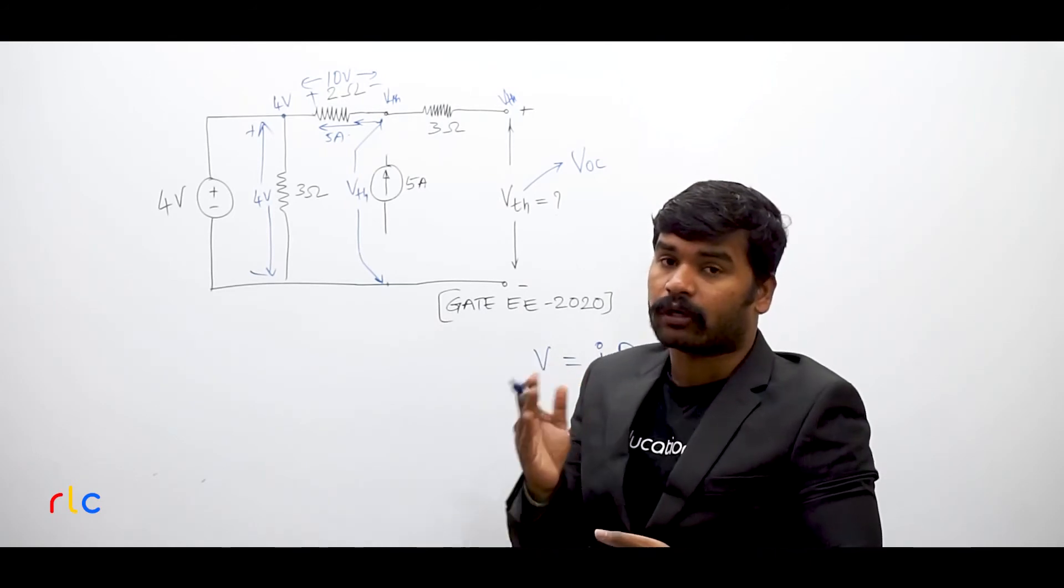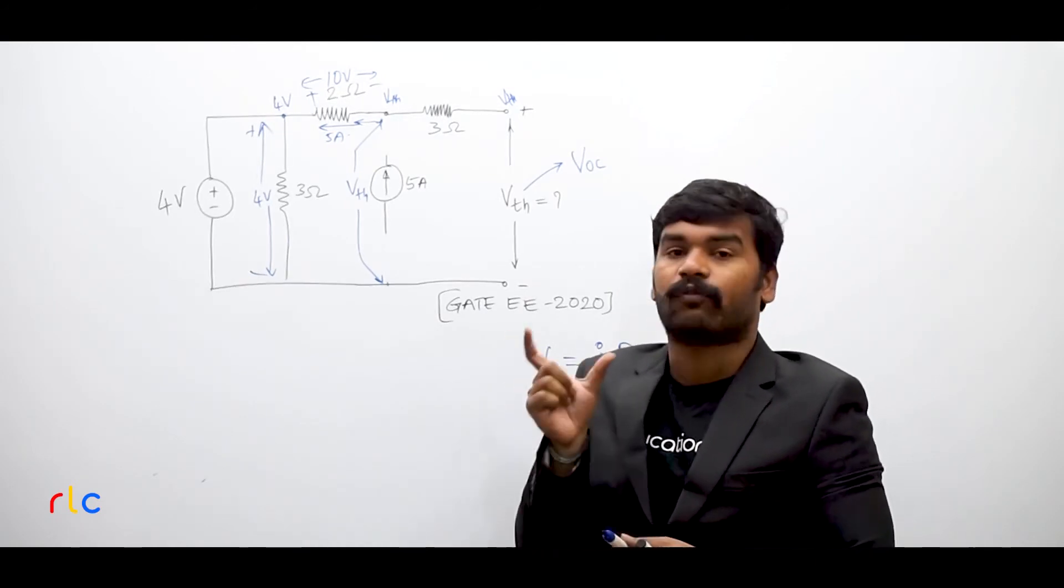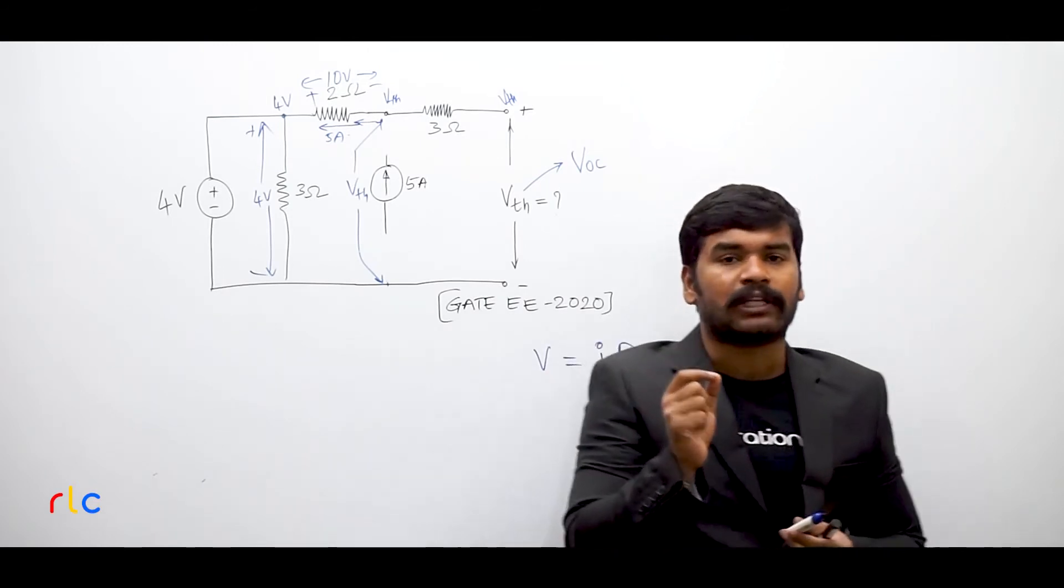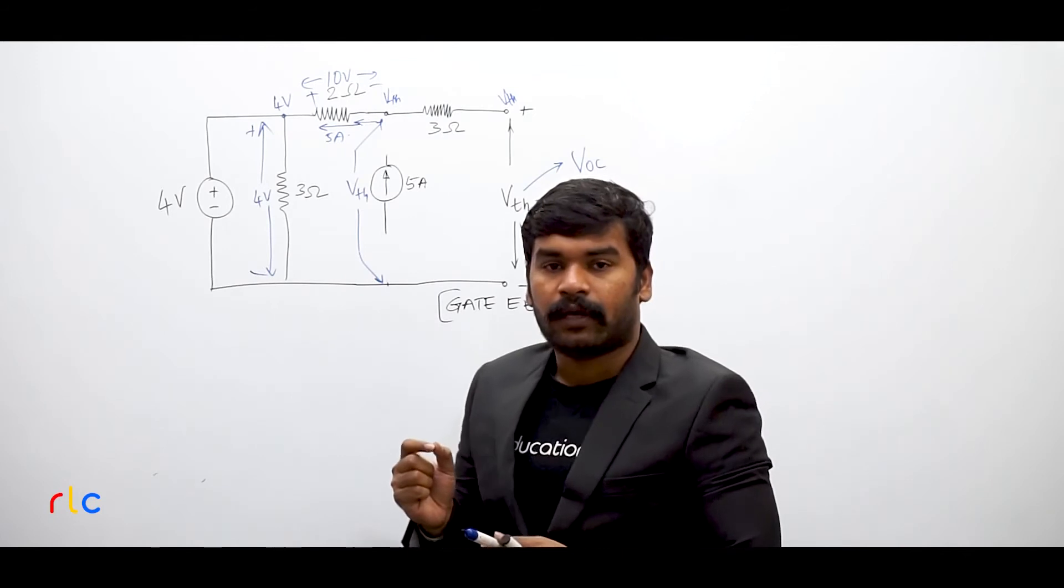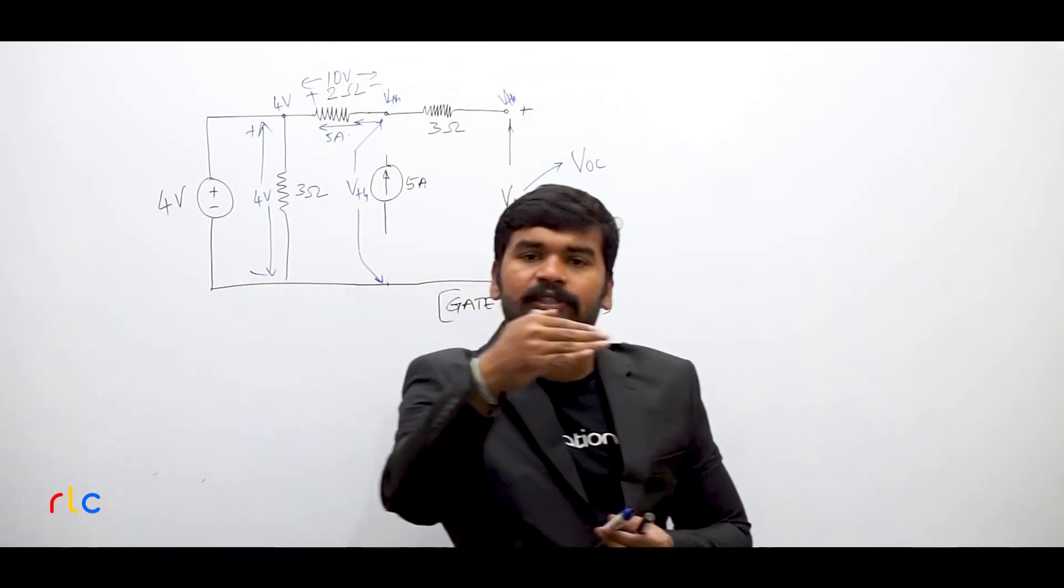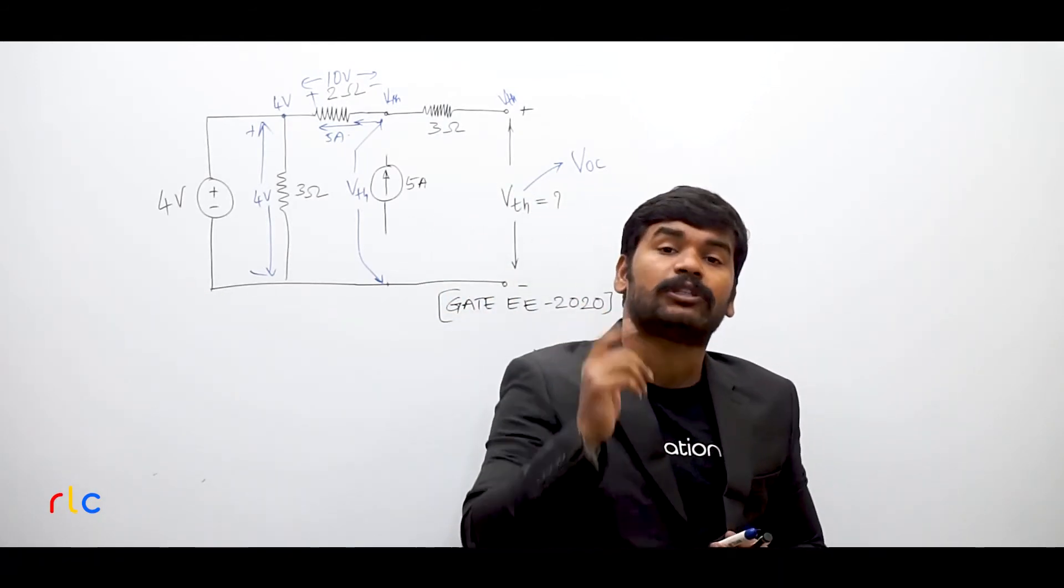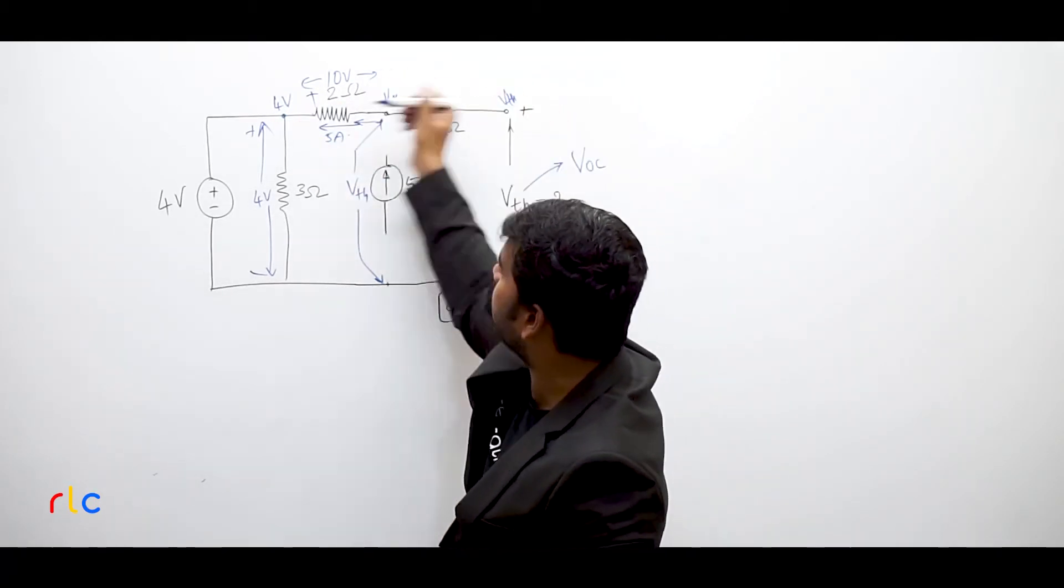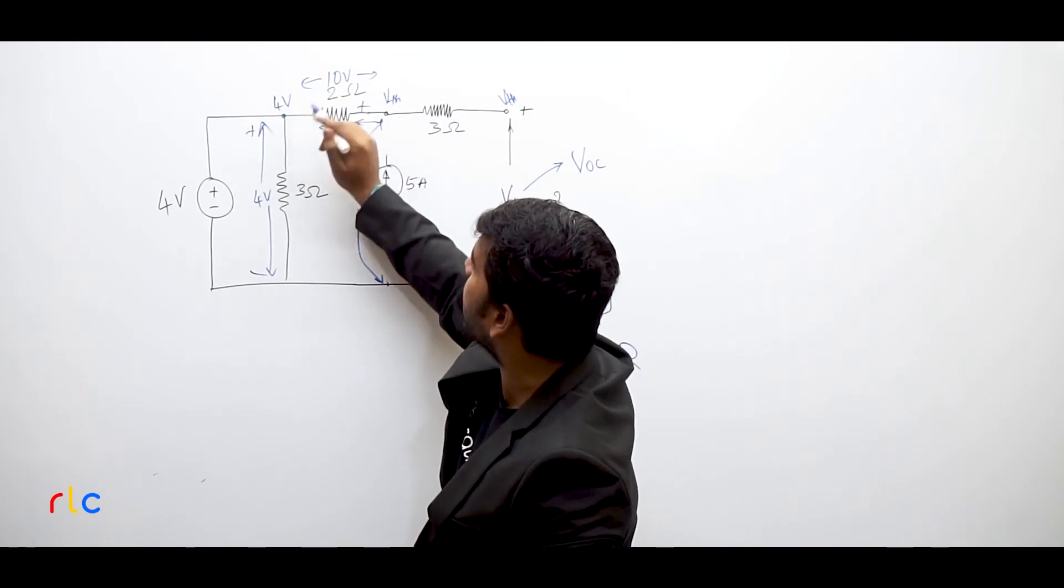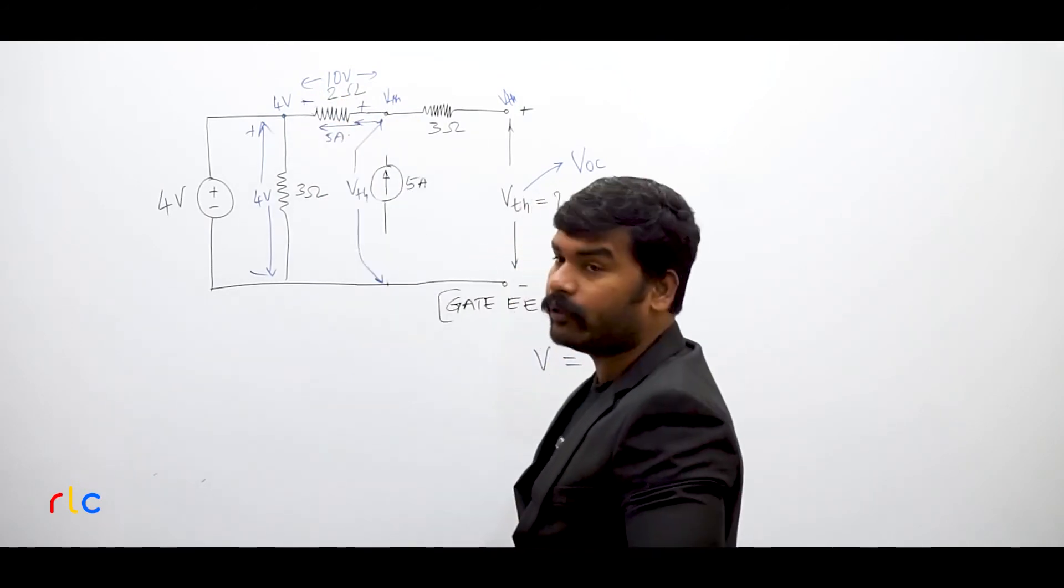But when you are going to take the polarity of voltage across any resistor, I always keep on telling students, just observe the direction of current in that resistor. At which terminal the current enters into the resistor, that terminal is positive. So if you look here, which side the current enters in? Here the current enters. So this is the positive terminal. This is automatically the negative terminal.